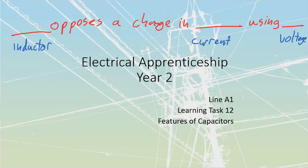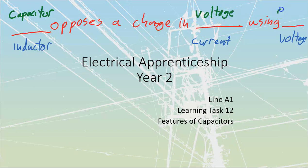Now, as we go into our capacitor, remember how these things are opposites. A capacitor opposes a change in voltage by using current. That's what we're going to be developing — how this capacitor opposes any change in voltage by utilizing current.